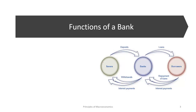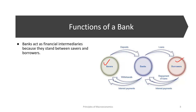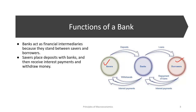Let's look at a figure to explain the functioning of a bank. We have savers on one side and borrowers on the other side, with banks in between. A bank is a financial intermediary — it stands between savers and borrowers. Savers place deposits in banks and receive interest payments, and they can withdraw money. Depending on the account type, a checking account allows withdrawals anytime, while a savings account has some restrictions but often pays higher returns.